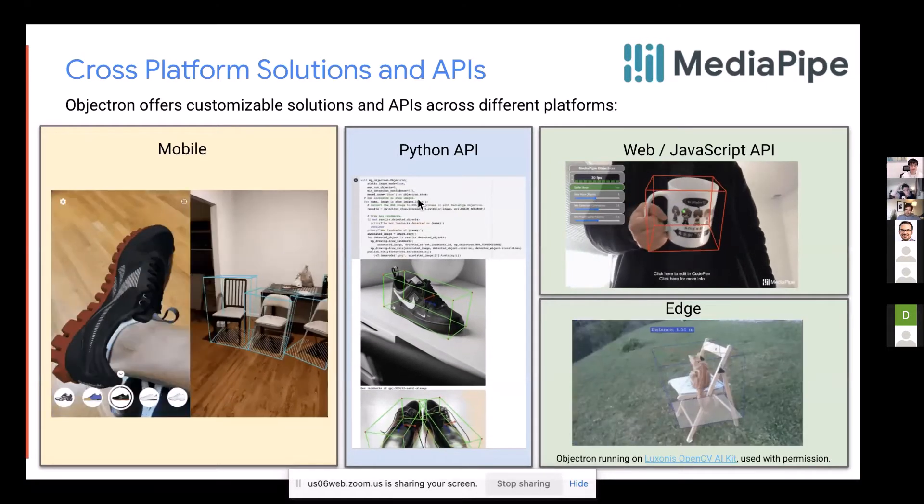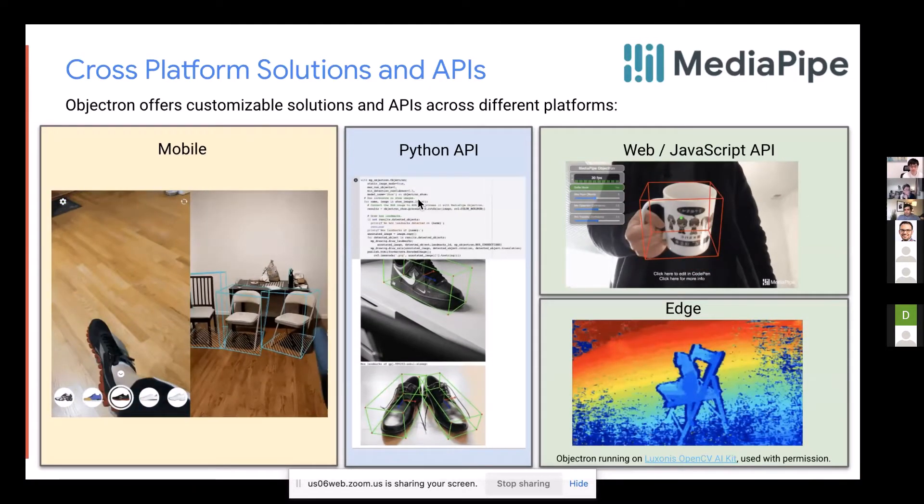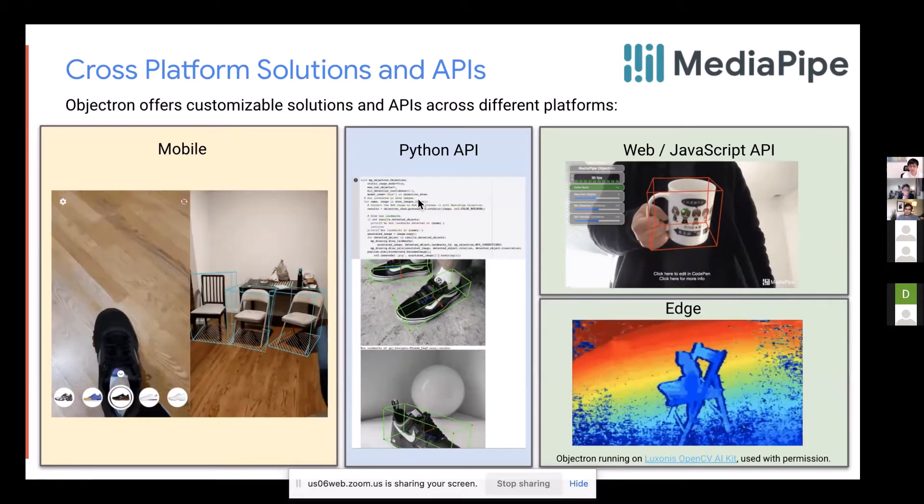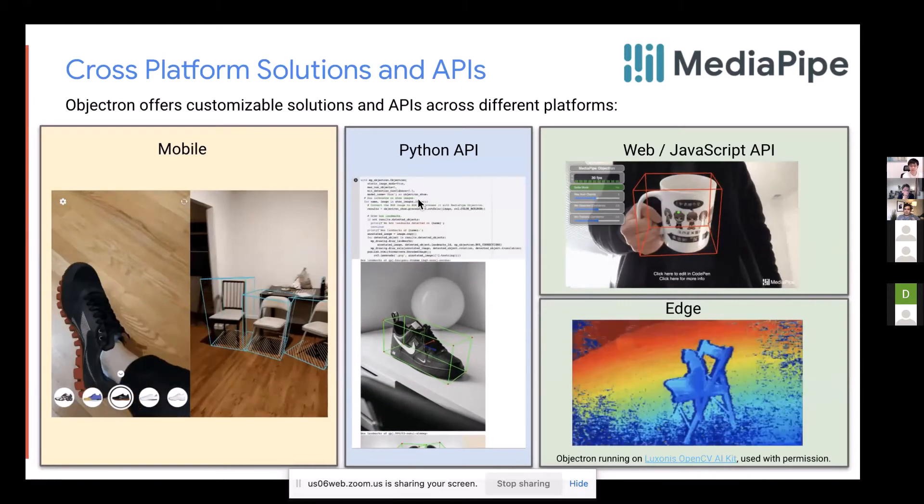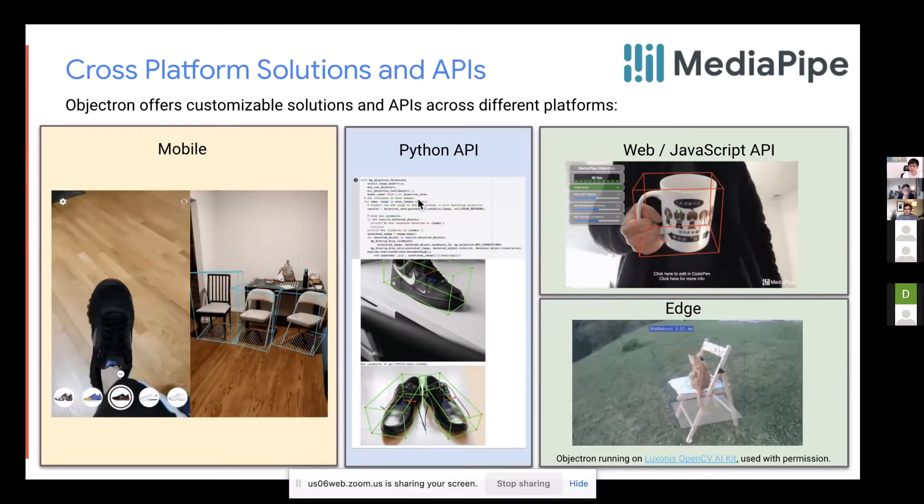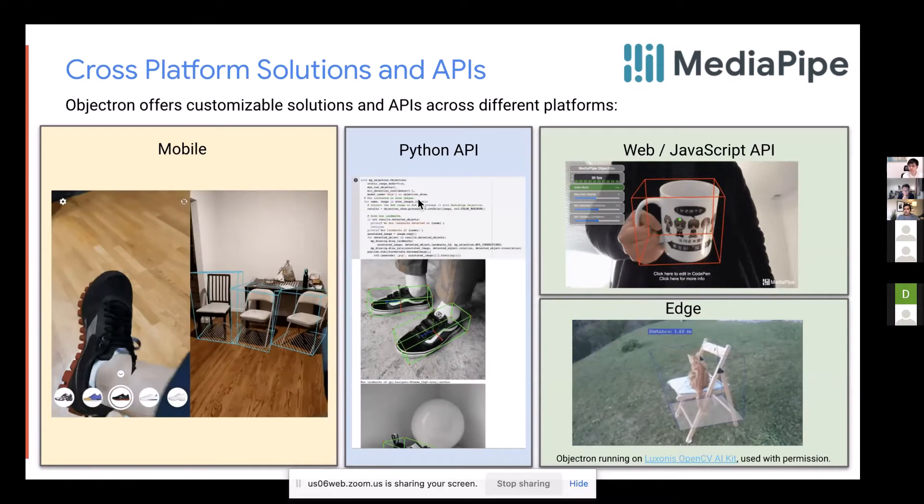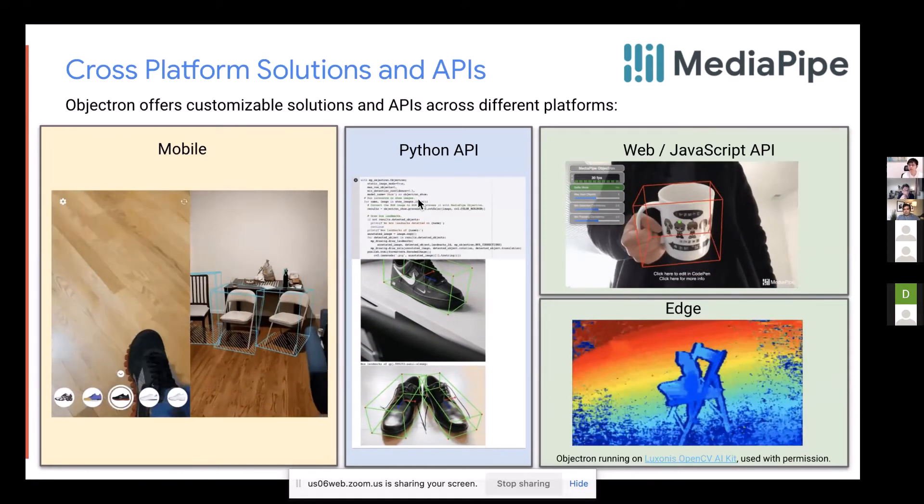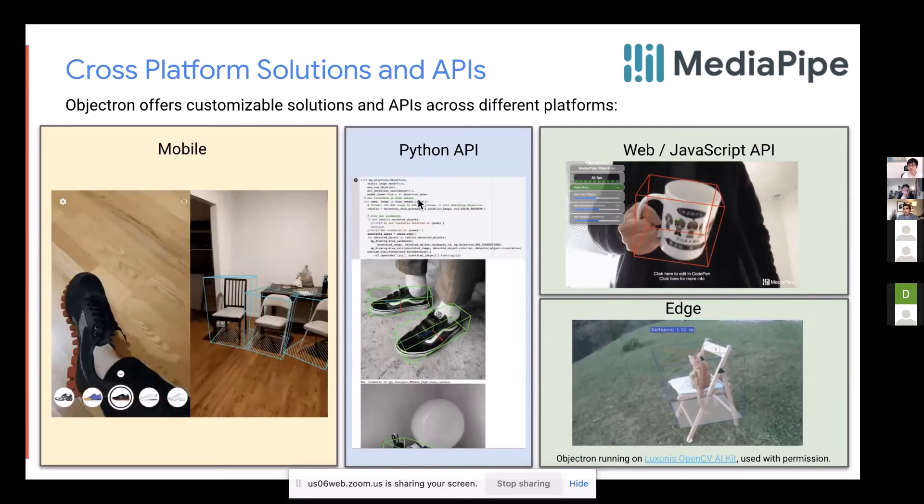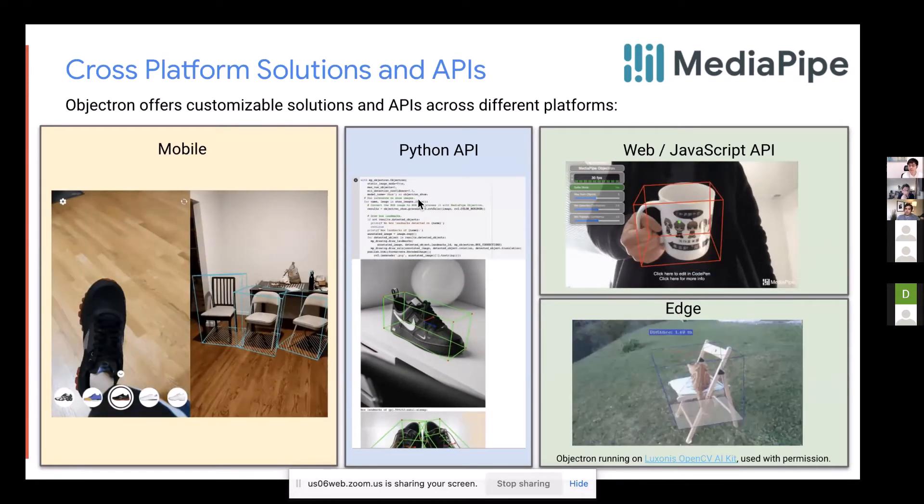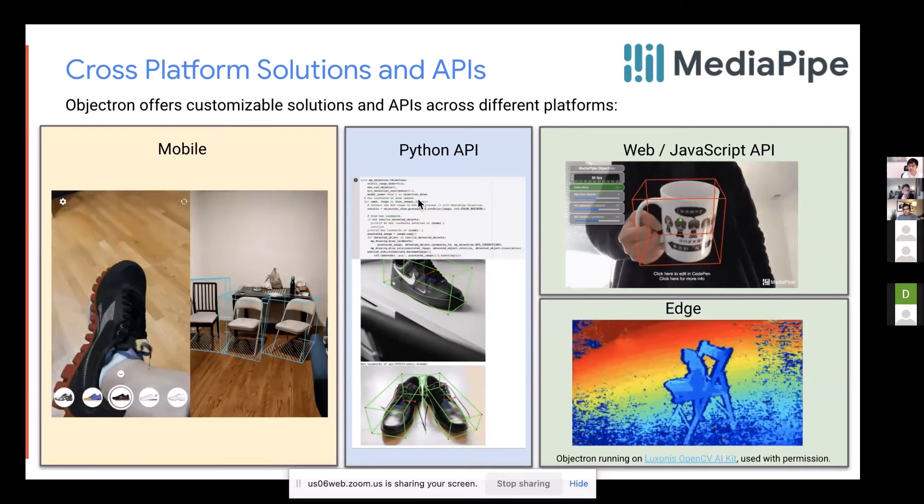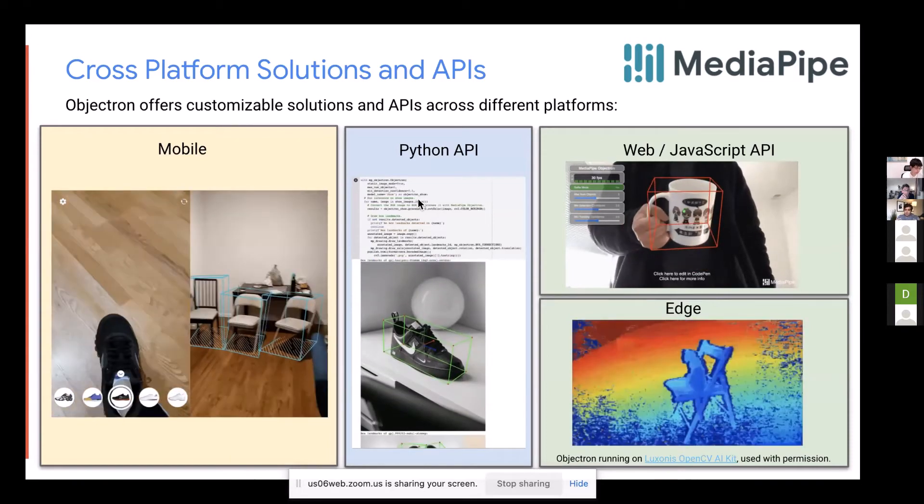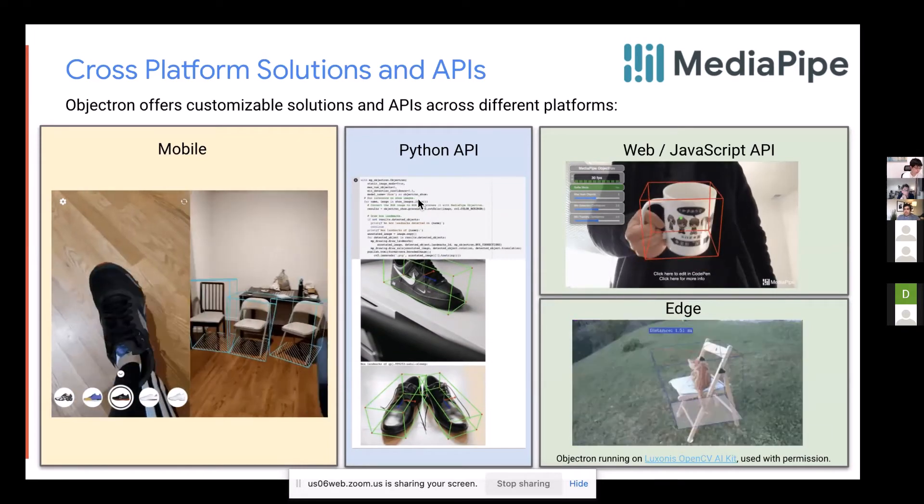Before I talk about the Objectron project, I want to plug a bunch of the models that we make, namely the Objectron solutions. We build these tiny and very fast small models that they can estimate the 3D pose of an object. And we put this on every device you can imagine, like you can run them on your mobile, on the web, via Python, or even you can deploy them on edge. And if you want to use them in your product or you want to use them in your course project, I would be very happy to help.